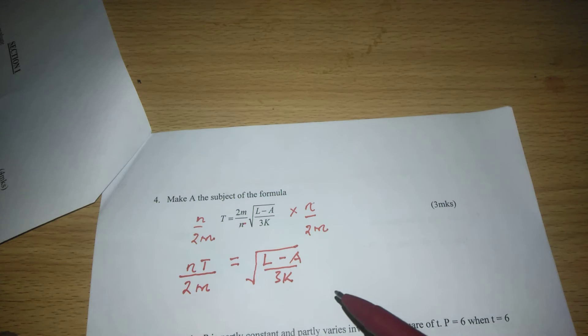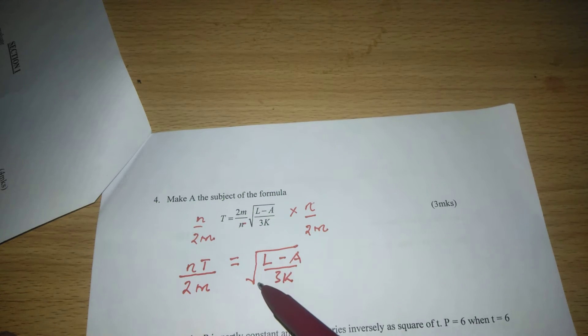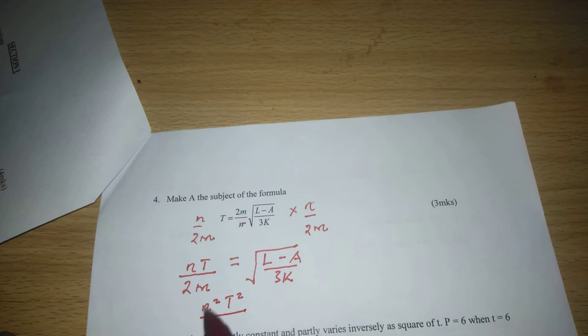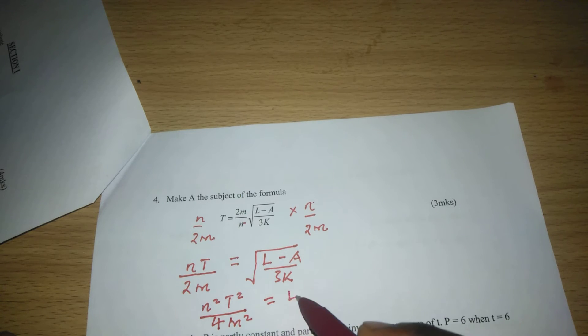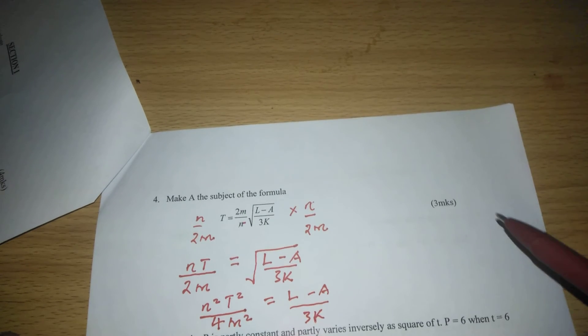We can now square both sides of the equation such that the square root on the right-hand side is eliminated. When we square, we get n squared t squared divided by 4m squared. This equals to L minus A divided by 3K, because the square root will be eliminated.